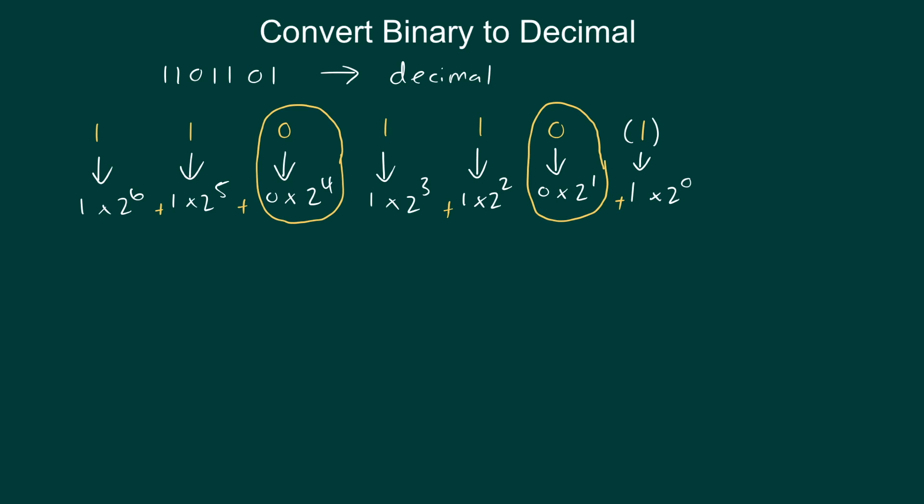And 1 times 2 to the 6 will give me 64. Plus 1 times 2 to the 5 gives me 32, plus 1 times 2 to the 3 will give me 8. Plus 1 times 2 to the 2 equals 4. And 1 times 2 to the 0 gives me 1. So if I sum up all these numbers, I'll get the number 109.